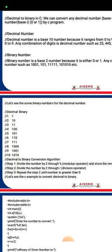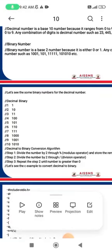3 is 11, 4 is 100, 5 in decimal is 101 in binary, 6 is 110, 7 is 111, 8 is 1000, 9 is 1001, and 10 is 1010.